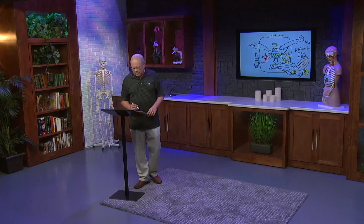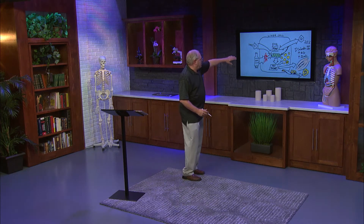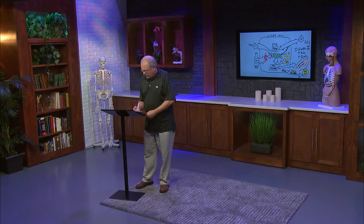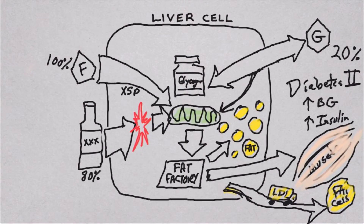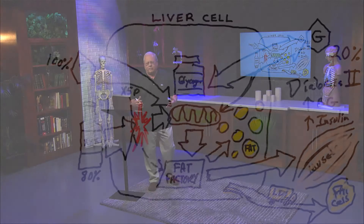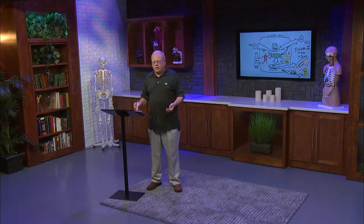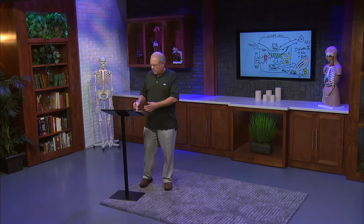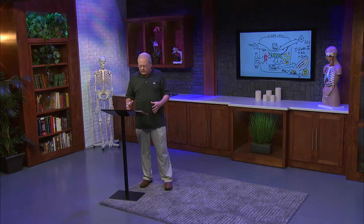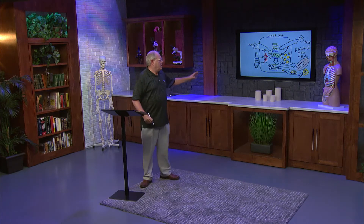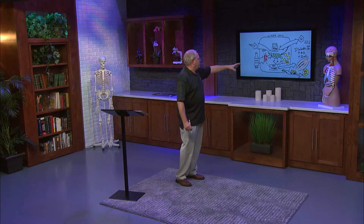That's not the only bad thing fructose does. As fructose goes through several metabolic stages, one intermediate called xylose 5-phosphate actually turns on fat factory production. The liver cell doesn't just have one fat factory — it makes more fat factories, accelerating the production of fatty liver, diabetes, and central obesity.